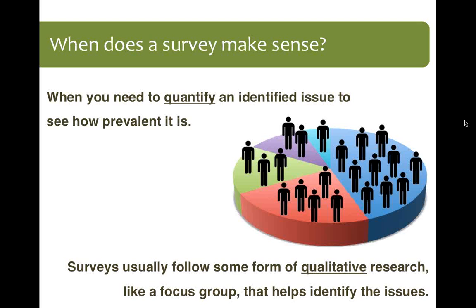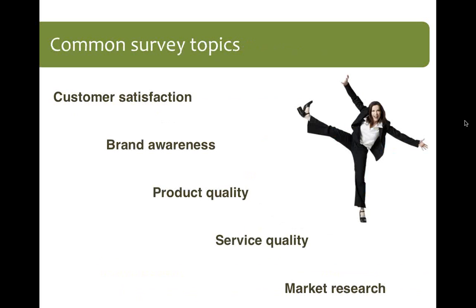An example of this would be product features. Suppose you pick up some chatter from your customer base about features they'd like to see in a future product — maybe through random conversations at a conference, a focus group, or things submitted via your website. You would then use a survey to figure out which of all those feature requests might make the most sense to put into the next version of a product. So that gives you a feel for when you would use a survey.